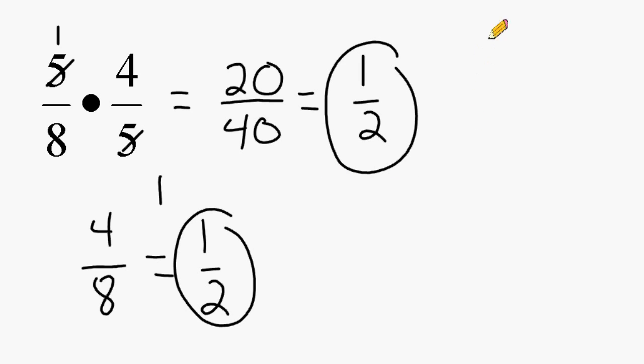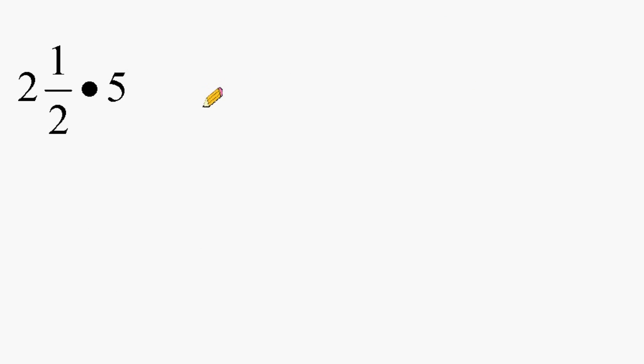Let's try another example. For this problem, we have a mixed number being multiplied by a whole number. So the first thing that we have to do is rename the mixed number into an improper fraction.